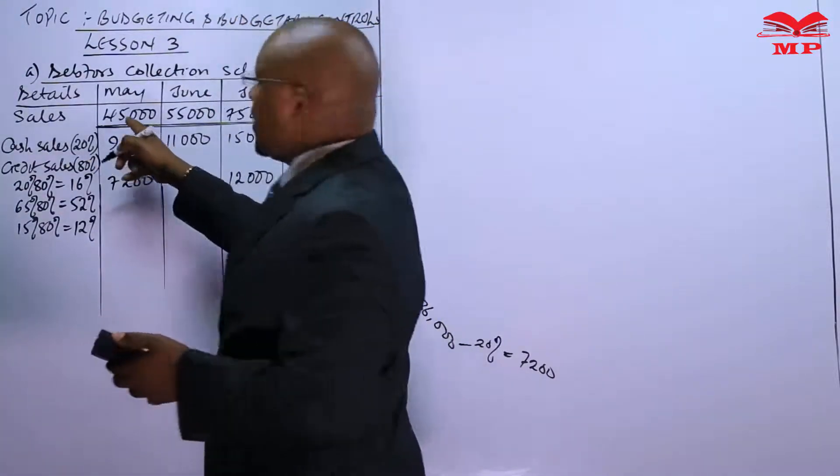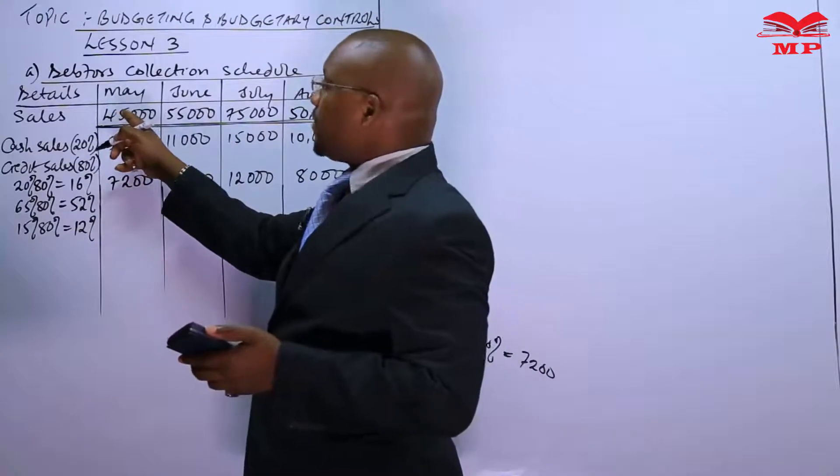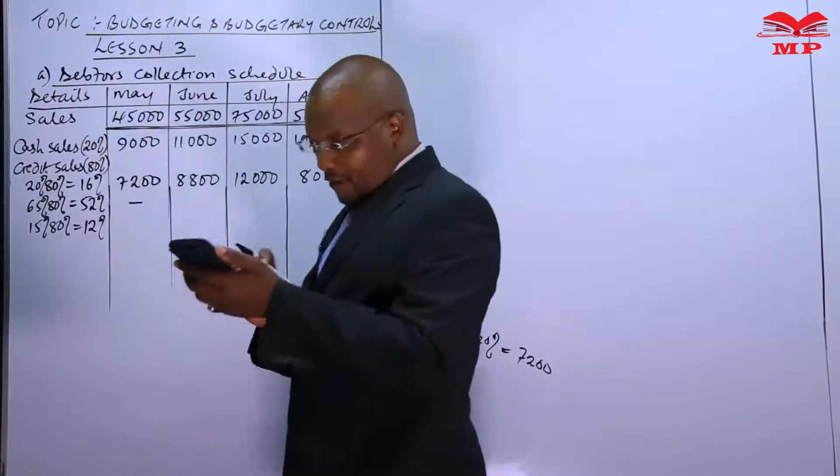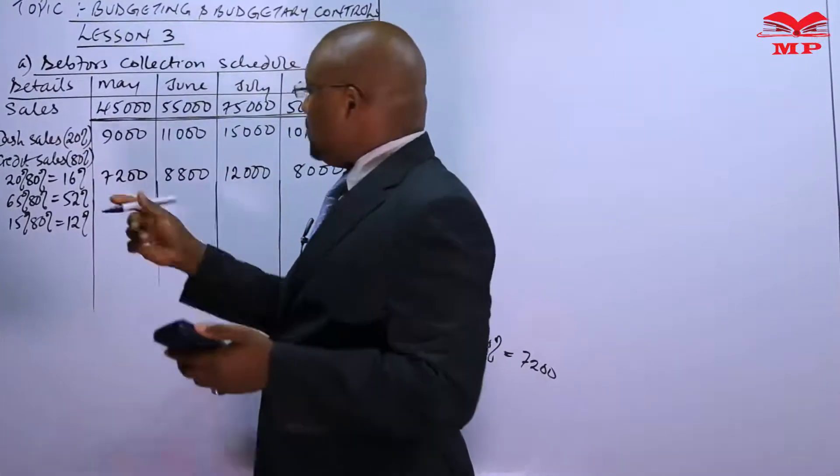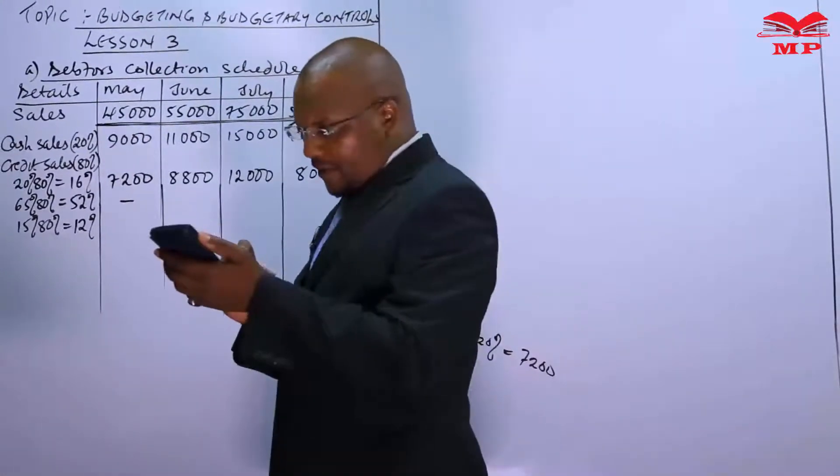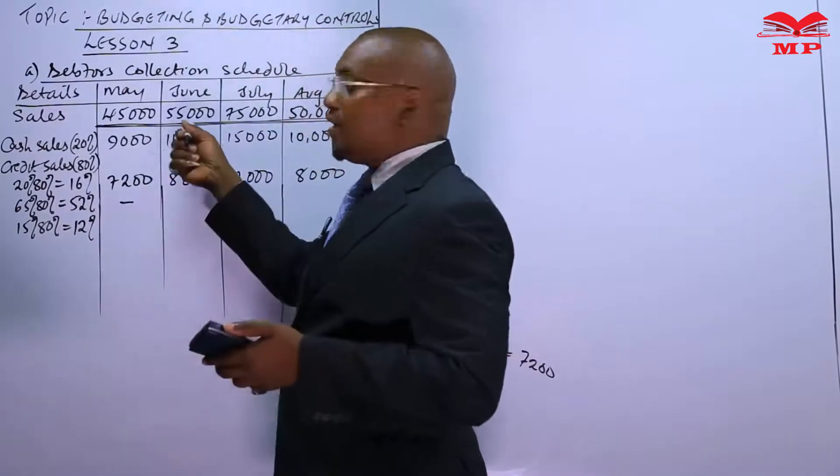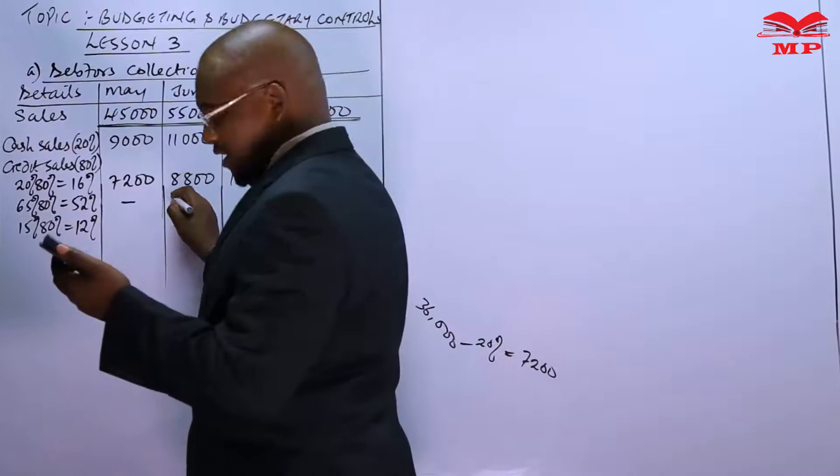Therefore we are going to expect the month of May, so this one we just have a dash, so that now we can do 0.52 times the 45,000 of the month of May to be collected in the month of June, which is here, this is 23,400.